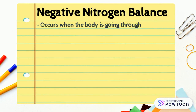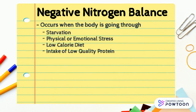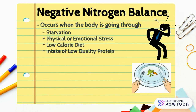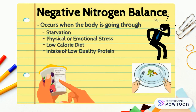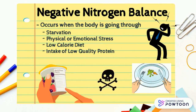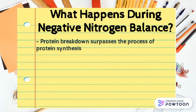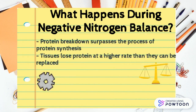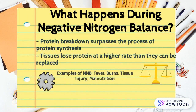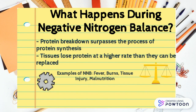Negative nitrogen balance occurs when the body is going through starvation, physical or emotional stress, low calorie diet, or intake of low quality protein. During negative nitrogen balance, protein breakdown surpasses the process of protein synthesis, and tissues lose protein at a higher rate than they can be replaced. Examples are fever, burns, tissue injury, and malnutrition.